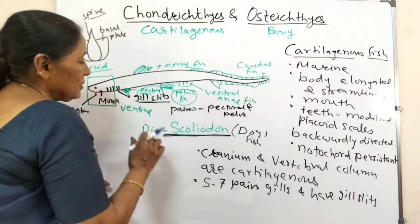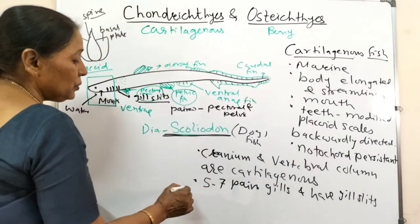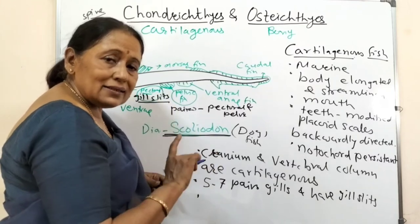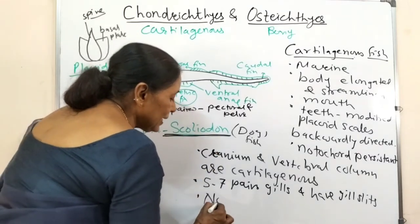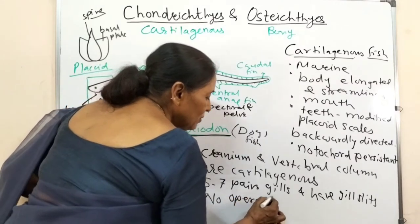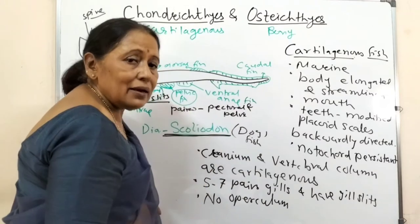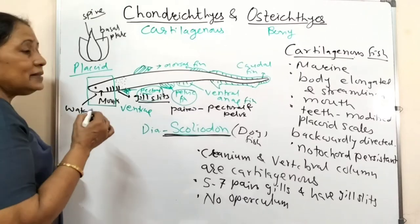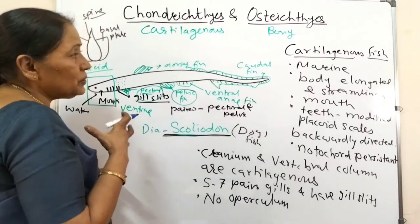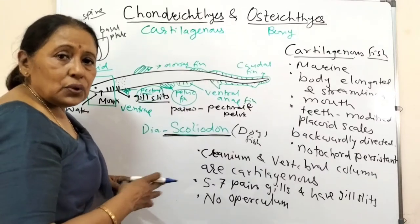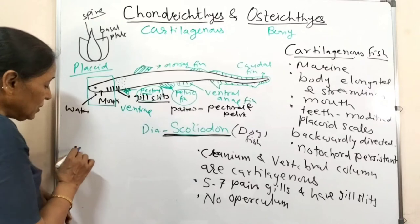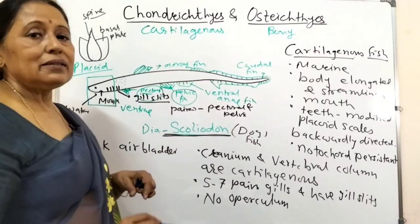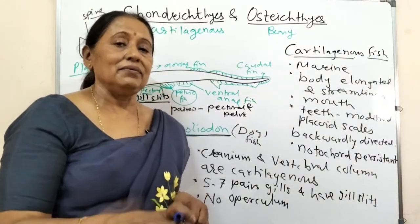In Scoliodon you can see the gill slits - that means there is no operculum. Those with an operculum do not have gill slits, and those with gill slits do not have an operculum. Both serve the same function: allowing water to move outwards. Cartilaginous fishes also lack an air bladder, so for buoyancy they must swim continuously - otherwise they will sink.